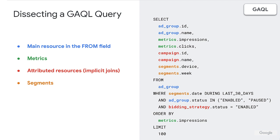So just to explain why things are color coded: the resource in our FROM clause will be in blue, regardless of which clause it's in — you can see it's blue in SELECT as well as WHERE. All of our metrics are in green. The attributed resources, which are those implicit joins I mentioned, are in red — so both campaign as well as bidding strategy are attributed resources on ad group. And finally, segments are in orange.